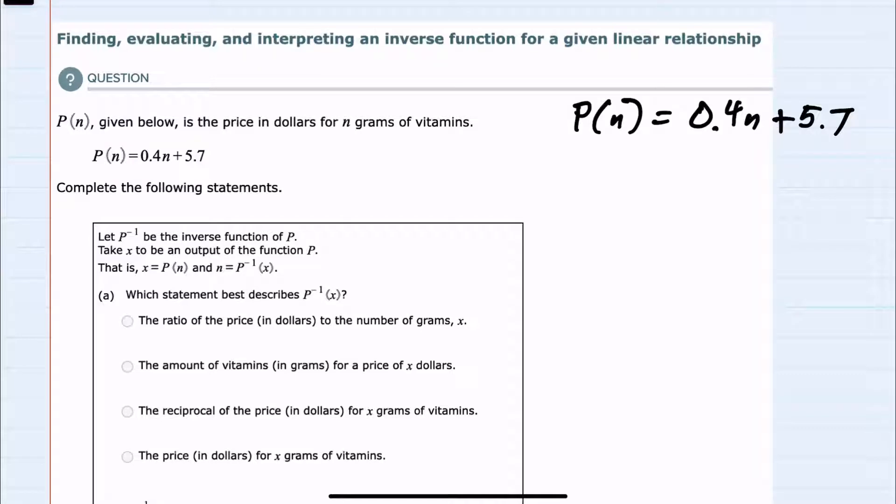In this example, we're given the function P(n), which is the price in dollars for n grams of vitamins. So the input is n grams of vitamins, and this function returns the price for those vitamins.